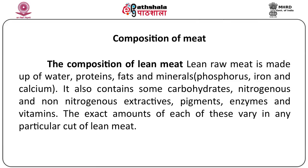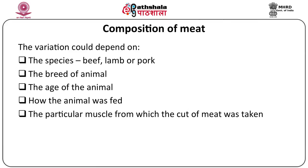The exact amounts of these components may vary in different cuts of meat. These variations depend on the species of the animal — whether beef, lamb or pork — the breed of the animal, the age of the animal, the diet of the animal, and the particular muscle from which the cut of meat was taken.